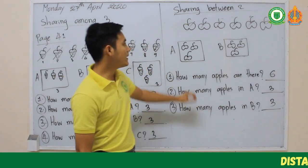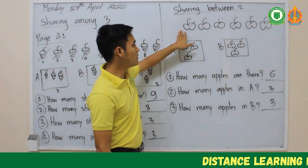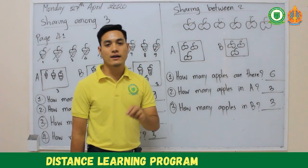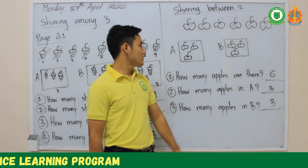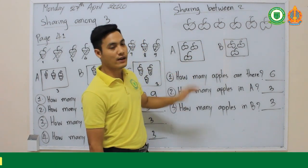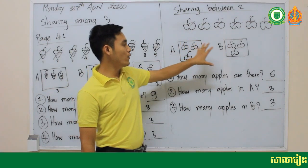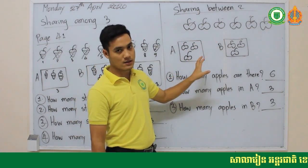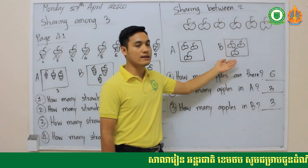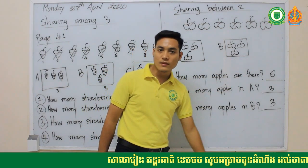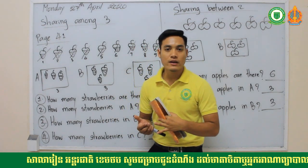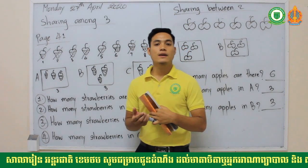For example, there are six apples. You share between two, and after sharing, each person gets three apples — three here and three here. You also learned about sharing among three, which means you need to share things among three groups.